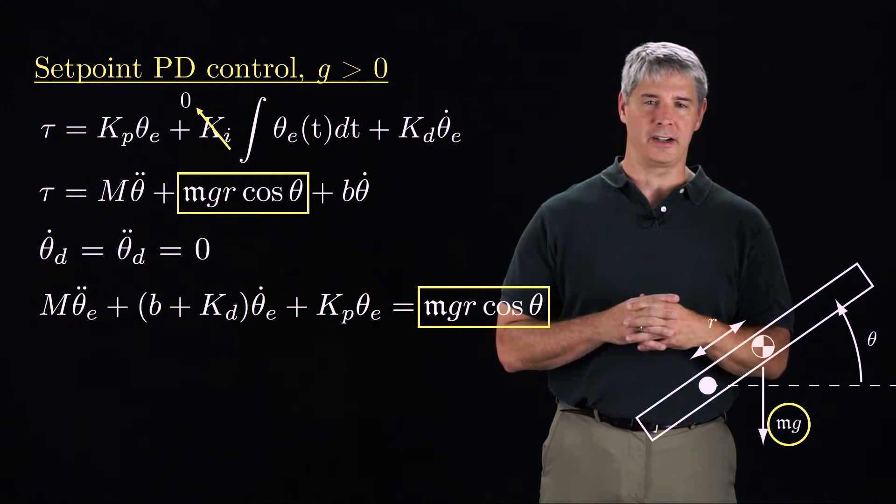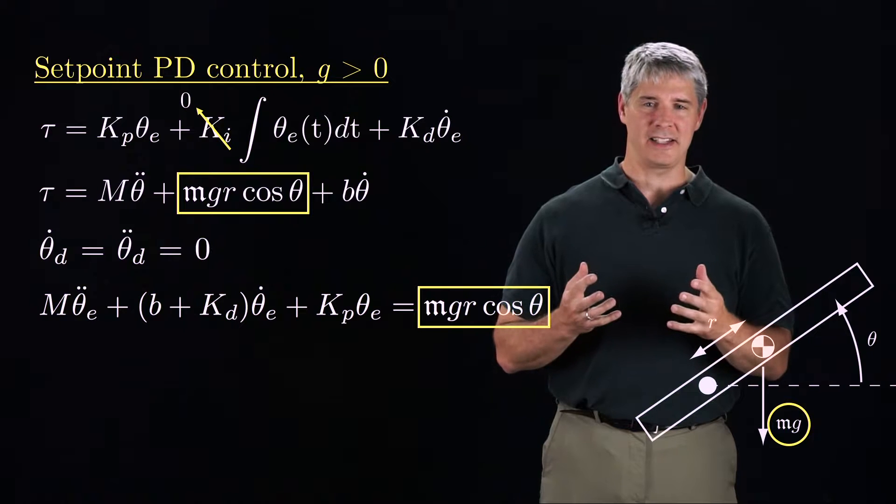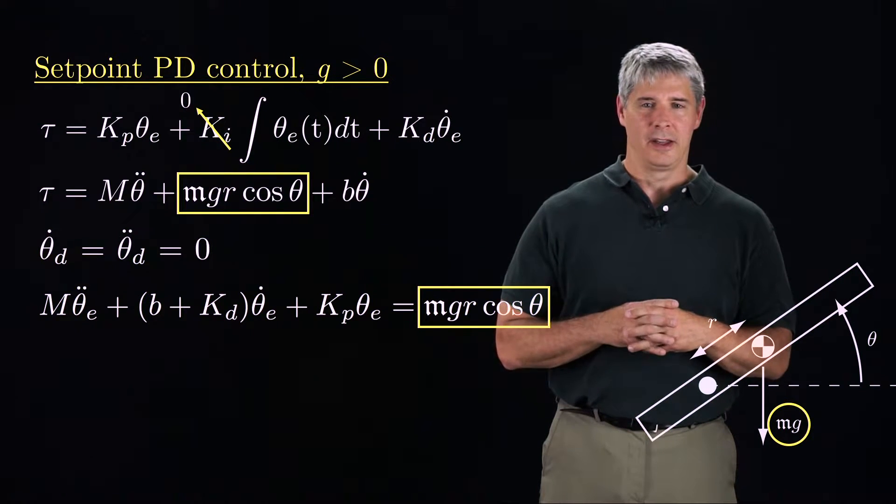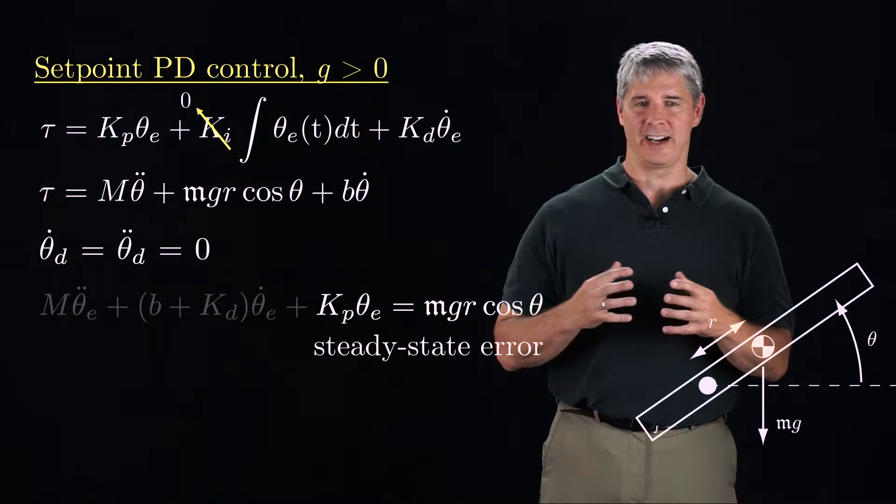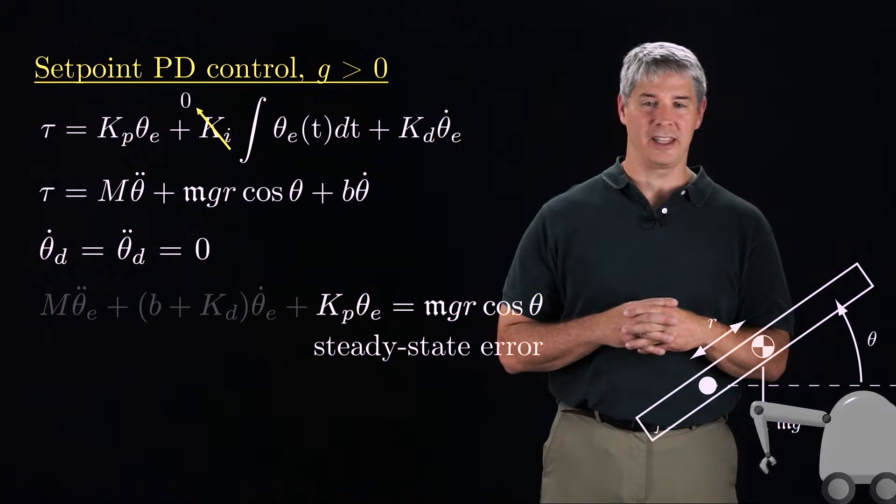As a result, even if the error dynamics are stable, at steady-state when theta double-dot and theta dot are zero, there will be a non-zero steady-state error, mgr cosine theta over kp.